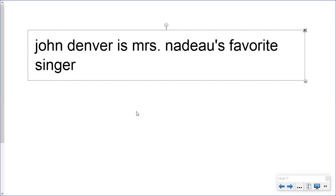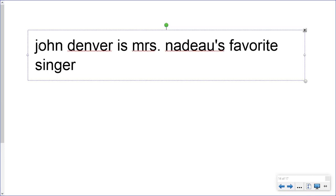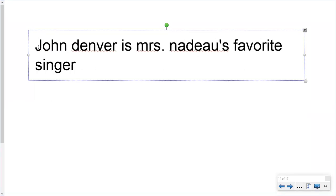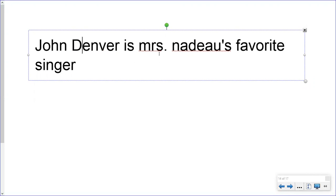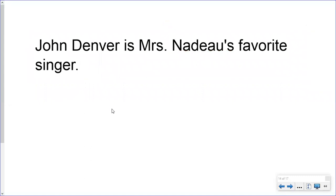Let's do some practice. Starting with this sentence: 'john denver is mrs. netto's favorite singer.' First, we need to start it with a capital letter. His entire name needs to be capitalized, so we capitalize John Denver. My name also needs to get capitalized — Mrs. Netto. John Denver is Mrs. Netto's favorite singer. Every sentence needs to end with punctuation; this is a declarative sentence, so it ends with a period. Looks much better.